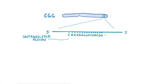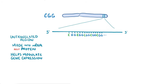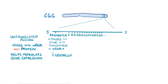A 5' untranslated region is the part of the DNA at the beginning of the gene that's made into mRNA but not protein, and helps modulate gene expression. Just upstream from the 5' untranslated region is FMR1's promoter, the region that causes the gene to be transcribed into mRNA, which is usually turned on.